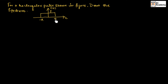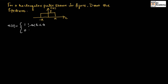This is the rectangular pulse which is shown here. This rectangular pulse will be having the amplitude as 1 for T value ranging between minus A to A. Therefore, we can write x(T), which is the rectangular pulse, as having the value 1 for T ranging between minus A to A, and 0 for all other values of T.